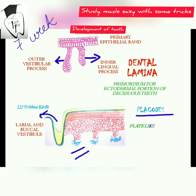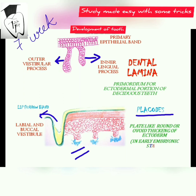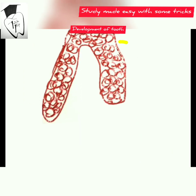At the eighth week, plate-like round or ovoid thickening of the ectoderm occurs corresponding to the location of the future teeth. Ectomesenchymal cells accumulate around the outgrowth of the dental lamina — this is called ectomesenchymal condensation. The distal proliferation of the dental lamina is responsible for the location of the germs of the permanent molars.